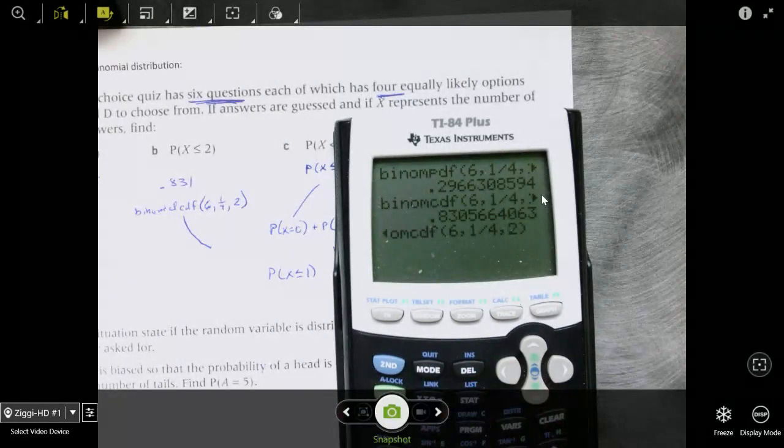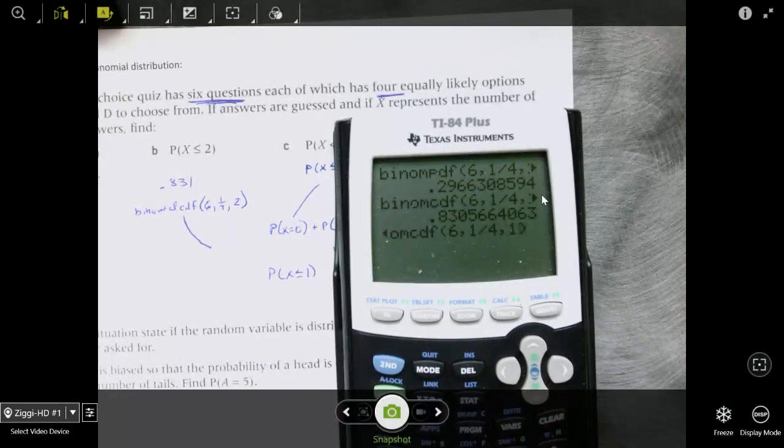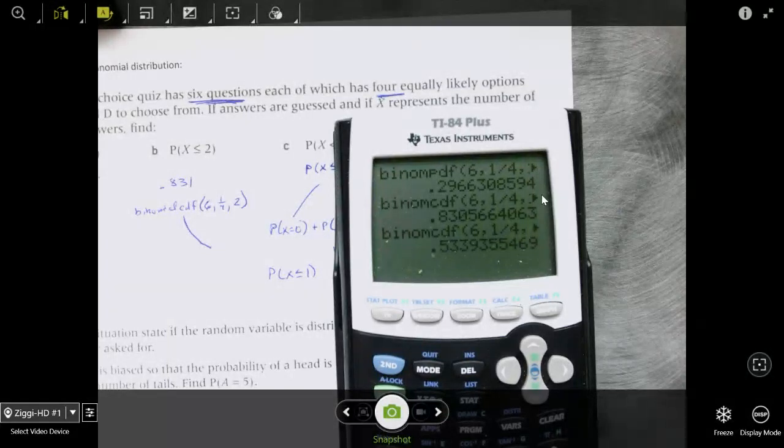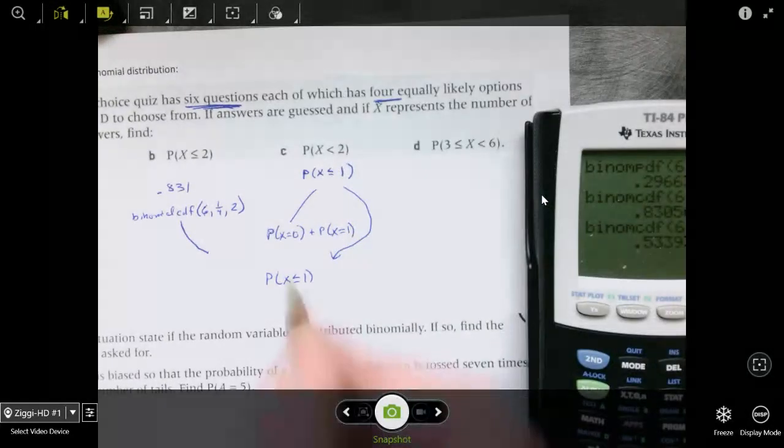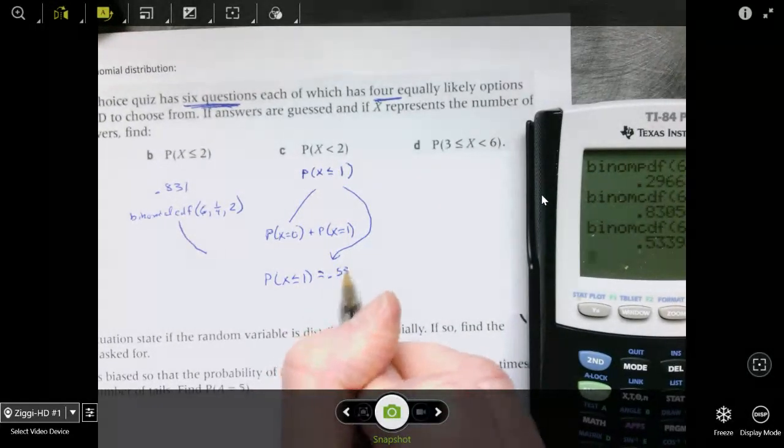Again, if you used binomial PDF and did it for 0 and wrote it down and 1 and wrote it down, those would add up to this number right here.